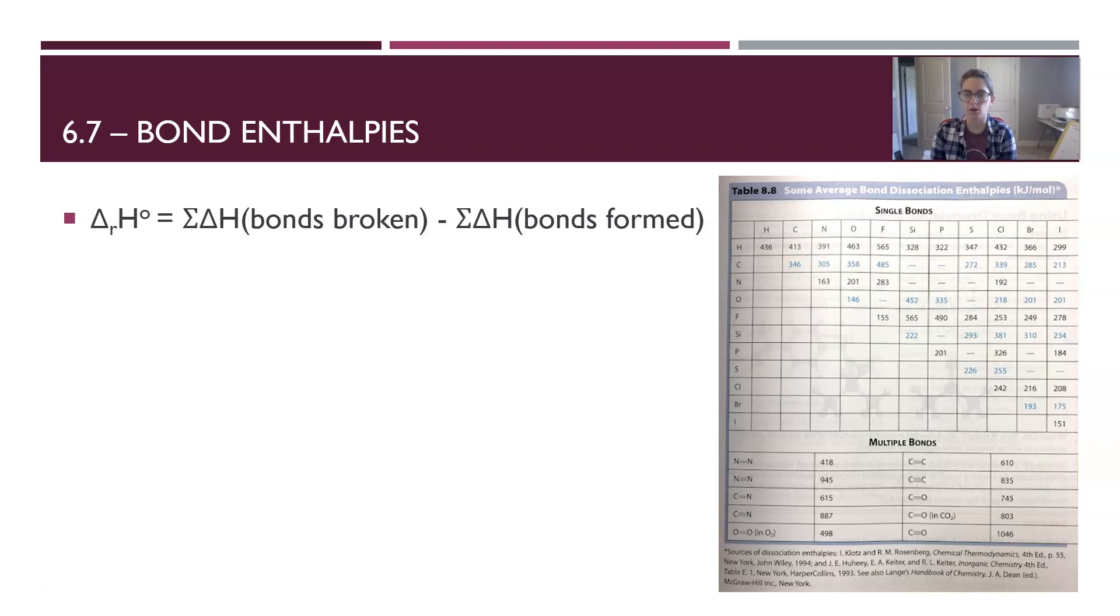In the single bond table, you find one of the elements across the top and you find the partner element across the side. Where those two parts intersect is the energy of that single bond. There are some selected multiple bonds given below.